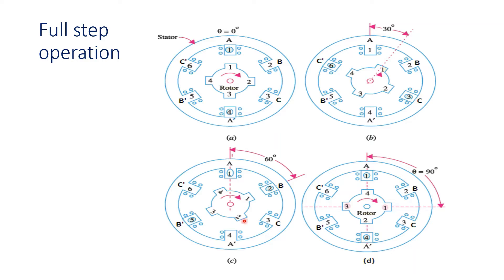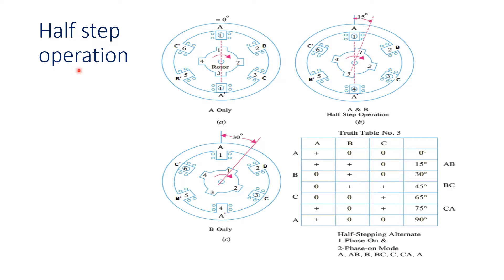If we excite coil A A-dash again, it turns so that rotor tooth 4 aligns with stator tooth 1, and rotor tooth 2 aligns with stator tooth 4. In half step operation, first we excite coil A A-dash and B B-dash together.